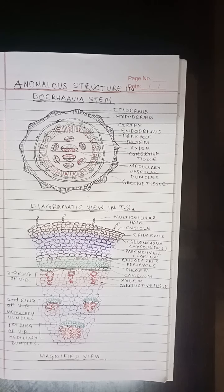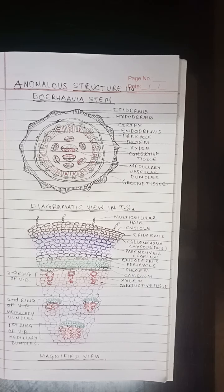Then pericycle: one or two layers of parenchyma below the endodermis form the pericycle. Isolated patches of sclerenchyma occur in the pericycle.